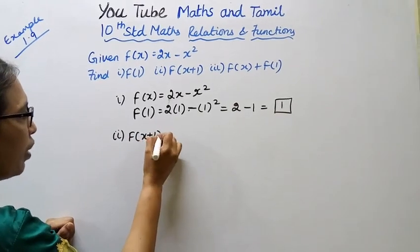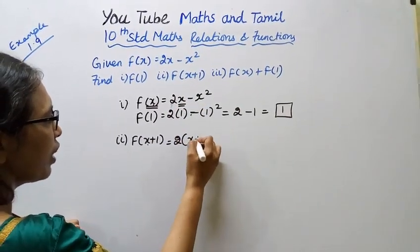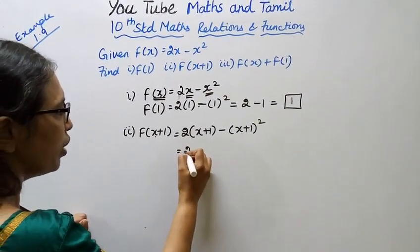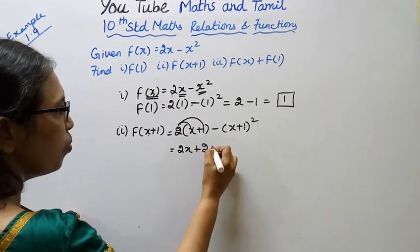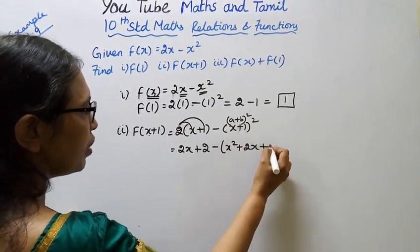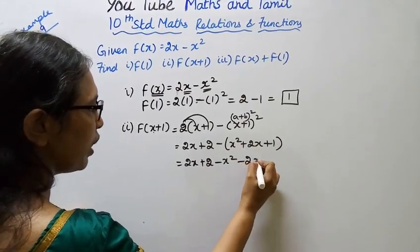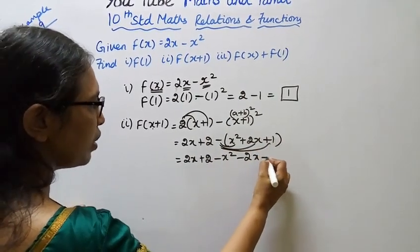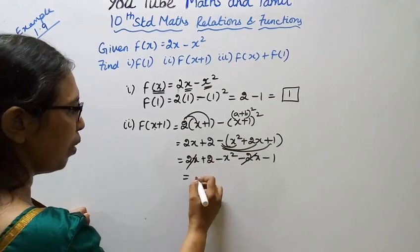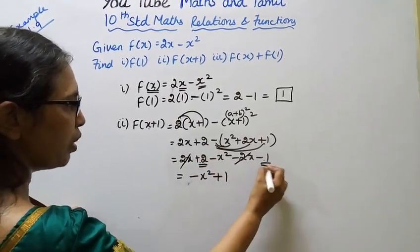f of x plus 1: substituting x plus 1 in place of x, we get 2 times (x plus 1) minus (x plus 1) squared. That gives 2x plus 2 minus (x squared plus 2x plus 1). Expanding and simplifying: 2x plus 2 minus x squared minus 2x minus 1. The 2x terms cancel, leaving negative x squared plus 1.